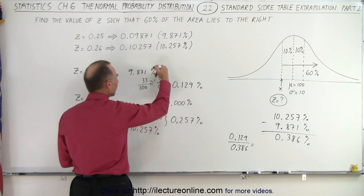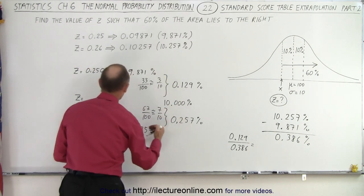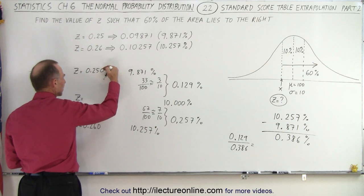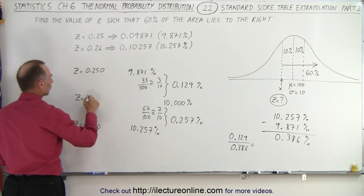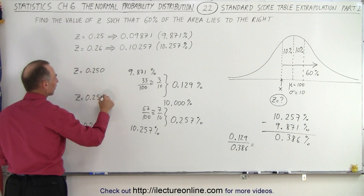So we're 3 tenths the way from here to here. So we want to go 3 tenths the way from here to here. 3 tenths the way would be 0.253.